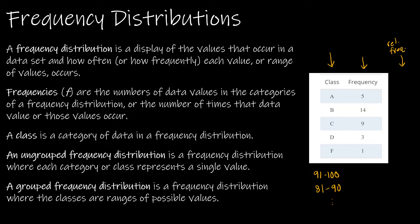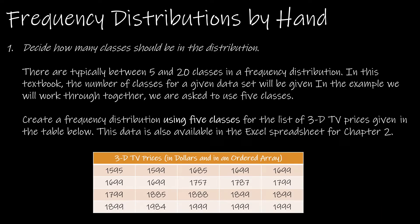We're going to start making some frequency distributions by hand and also using Excel. Many of the same questions you must consider when creating a distribution by hand are the same questions you should consider in Excel. The first question is: how many classes do you want in the distribution? Typically it should be between 5 and 20, but in this class we will tell you how many classes to use.